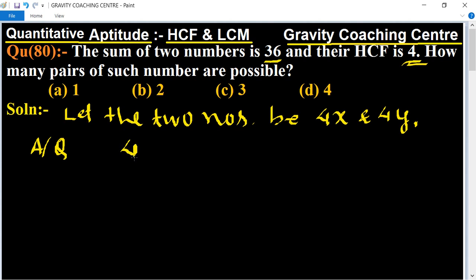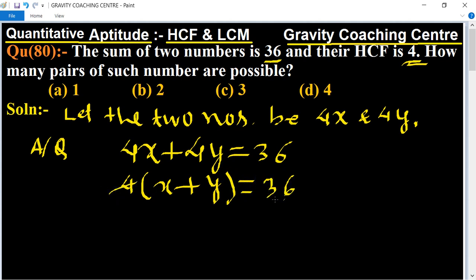4x plus 4y equal to 36. Now we take the common factor 4, then x plus y equal to 36. So table of 4: four times nine. Then x plus y equal to 9.